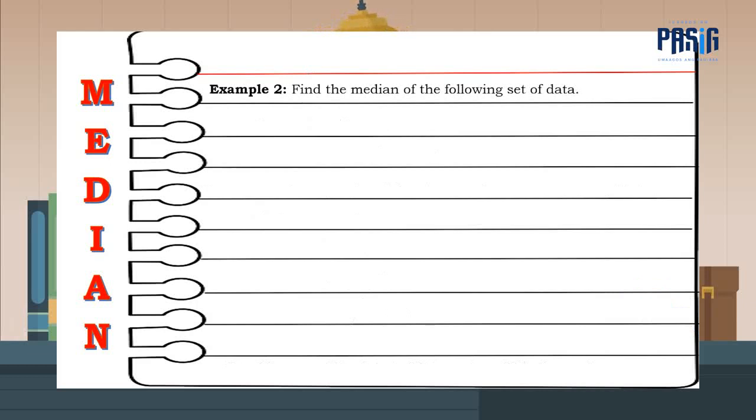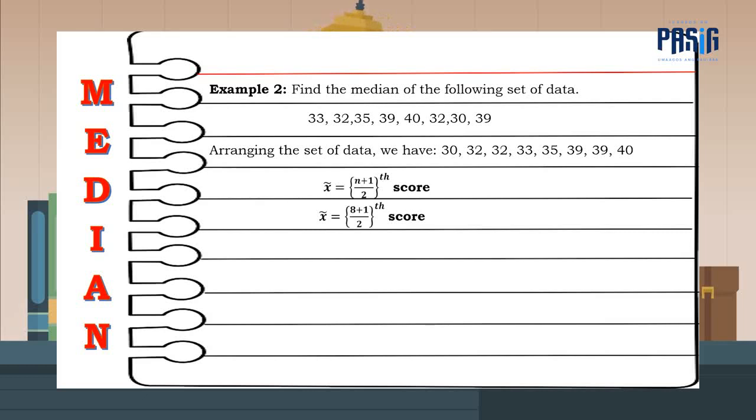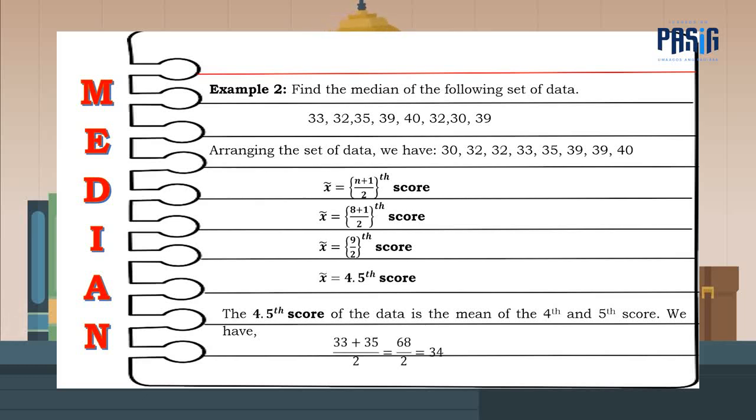Let us have example number 2. Find the median of the following set of data. By arranging the set of data, we have. Let us now use the formula to locate the position of the median, where n is equal to 8. Therefore, the median is the 4 and 5 tenth score. The 4 and 5 tenth score of the data is the mean of the 4th and 5th score. We have 33 plus 35 all over 2, and that is equal to 34. Therefore, 34 is the median.